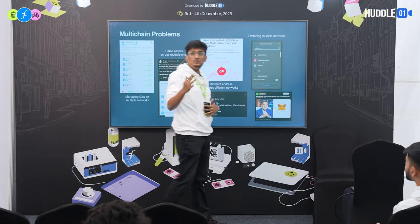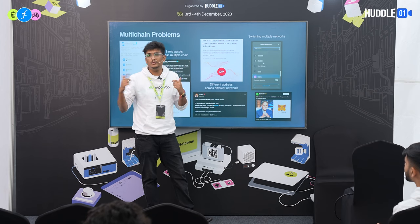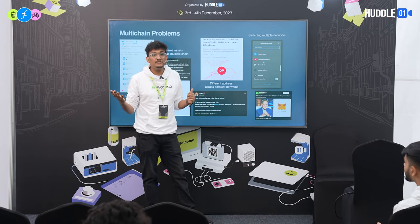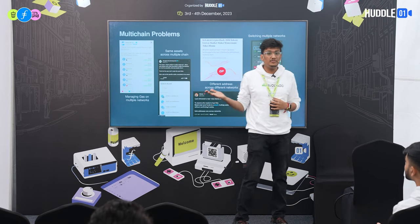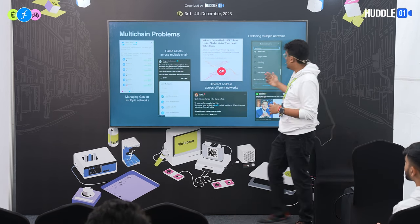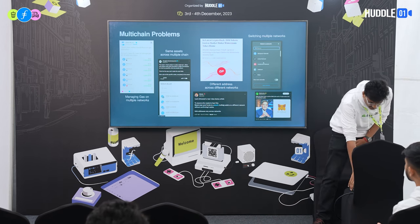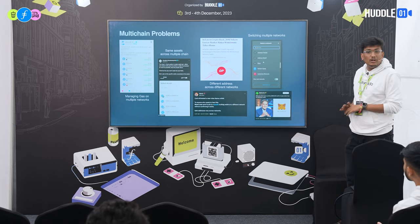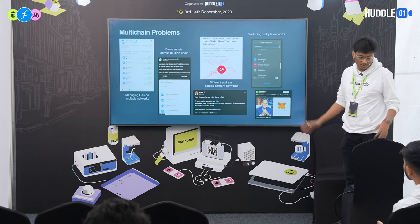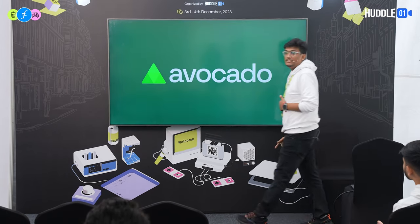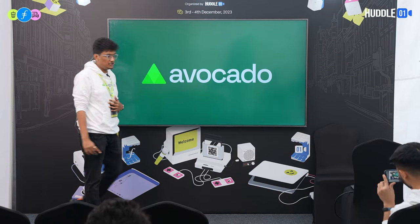When using multiple chains on MetaMask, there are a lot of chains to switch, and the dApp also needs to adapt — it keeps asking you to switch network. A lot more dApps and chains are creating UX issues, and that's where Avocado comes into the picture. Avocado is here to solve multi-chain UX issues.